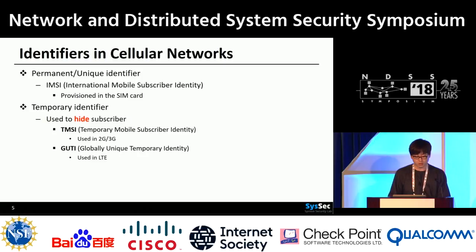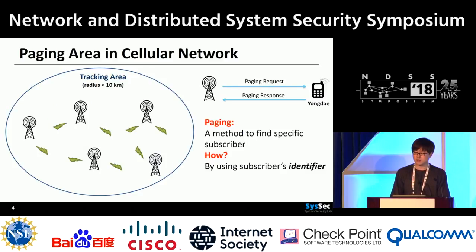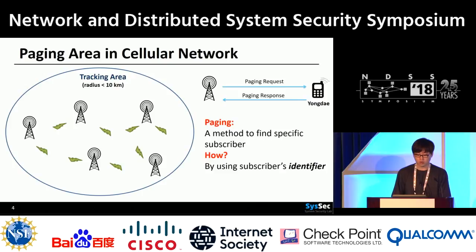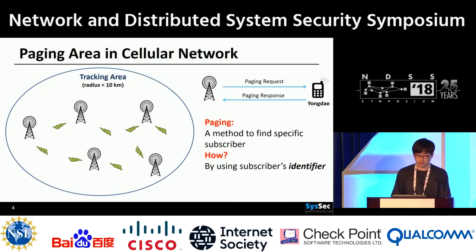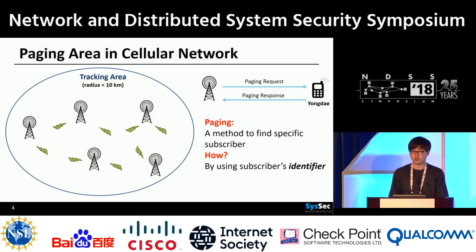As I said, paging request must include an identifier — in this example, Yongdae. Note that this paging message is not encrypted. In other words, all contents in the paging messages can be eavesdropped. When an attacker catches this identifier, she can check if this identifier is within the tracking area or not. In other words, if an attacker can match the identifier with a person, she can check if the victim is within the location area or not.